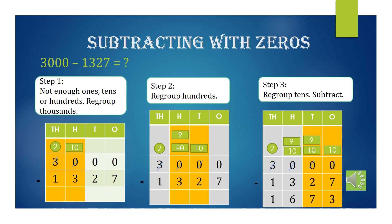Step 1: 3 in the thousands gives 1 to the hundreds place, so thousands becomes 2. Step 2: Regroup the hundreds — 10 gives 1 to the tens place, so hundreds becomes 9. Step 3: Regroup the tens — 10 gives 1 to the ones place, so tens becomes 9. Finally, by subtracting you get the answer 1,673.